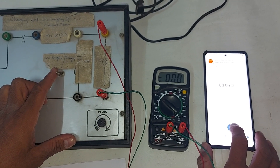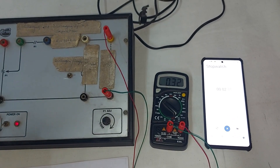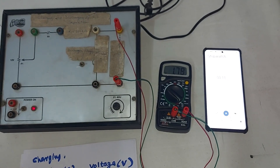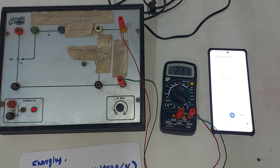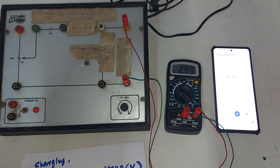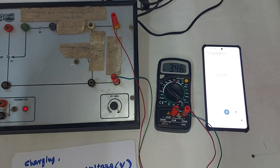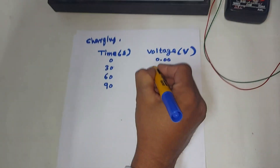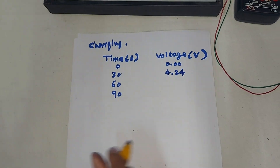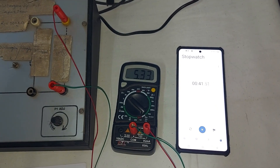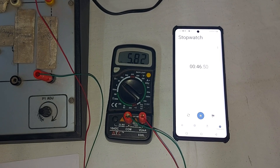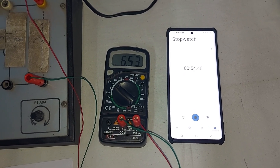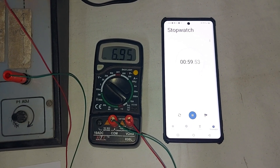I will start both the stopwatch and the circuit simultaneously — 1, 2, 3, start. After 30 seconds we have to note down the reading. At around 30 seconds the reading is 4.24 volt. Then for 60 seconds we have to note down the next reading.